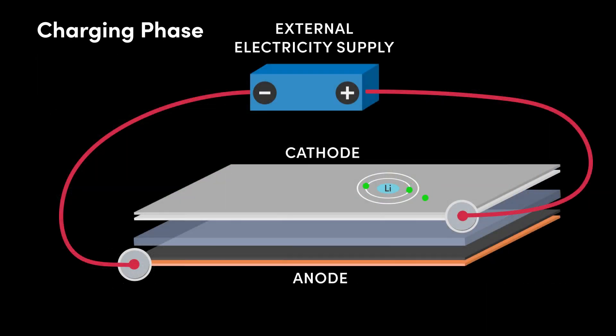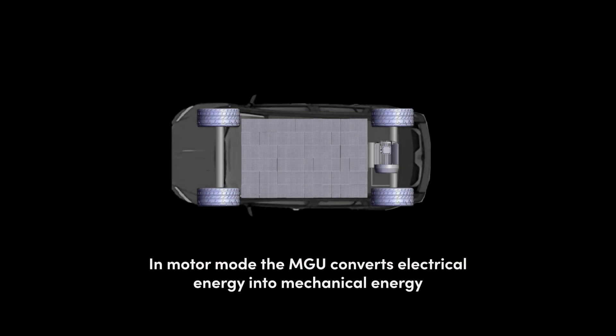Take a look at our video on batteries to understand exactly how they work, including how they are charged. When the car is accelerating, the MGU switches back over to motor mode to function as a motor, converting the electrical energy from the battery pack into mechanical energy to drive the wheels of the vehicle.